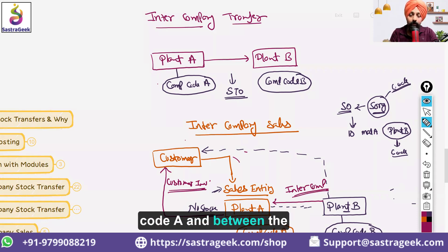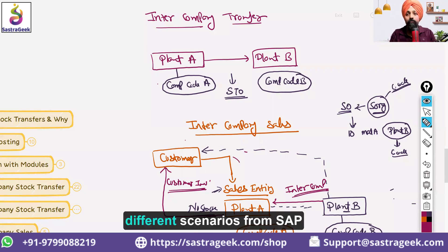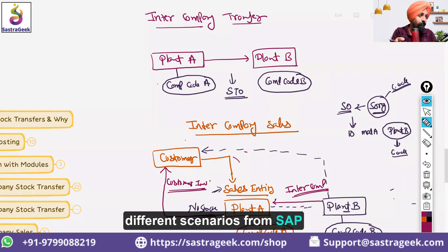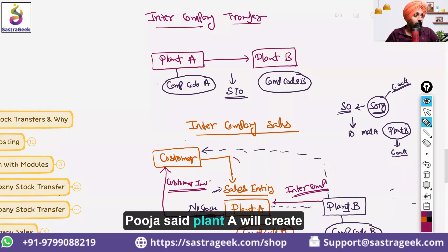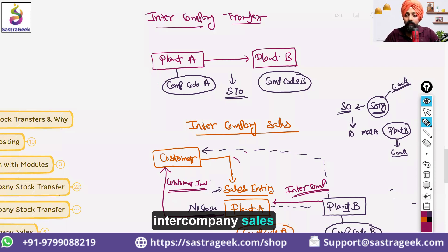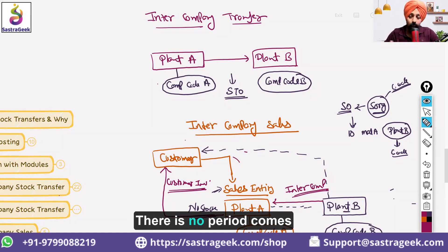The intercompany sales invoice is between Company Code A and Company Code B. A lot of people in interviews get confused between intercompany transfers and intercompany sales — they are two completely different scenarios. In intercompany sales, there is no PO created; we only have the standard sales process with an additional intercompany invoice document between the two company codes. No purchase order comes into the picture.